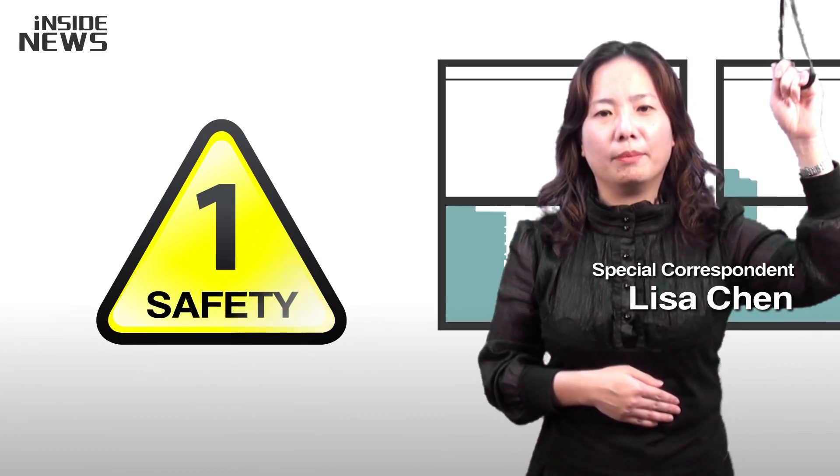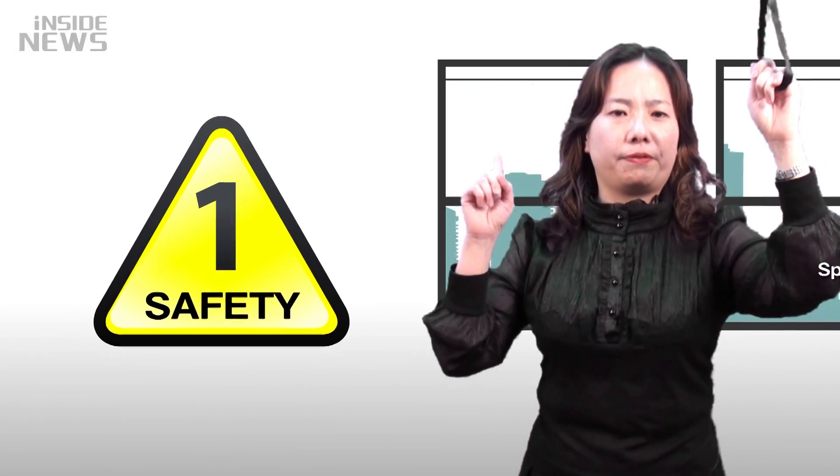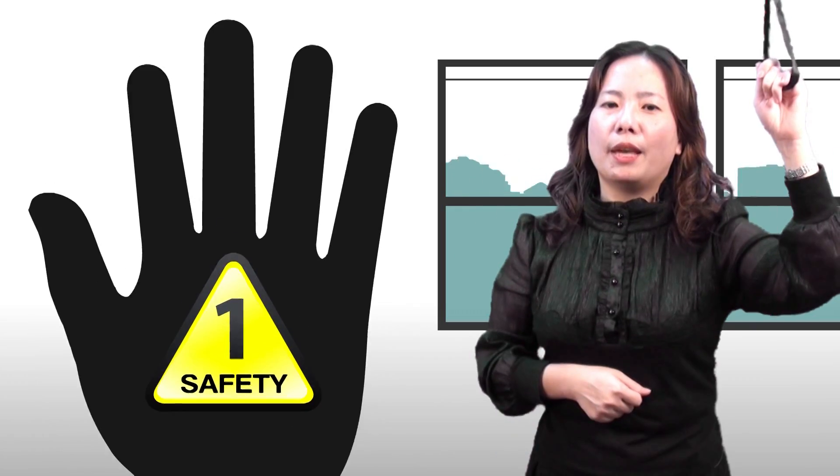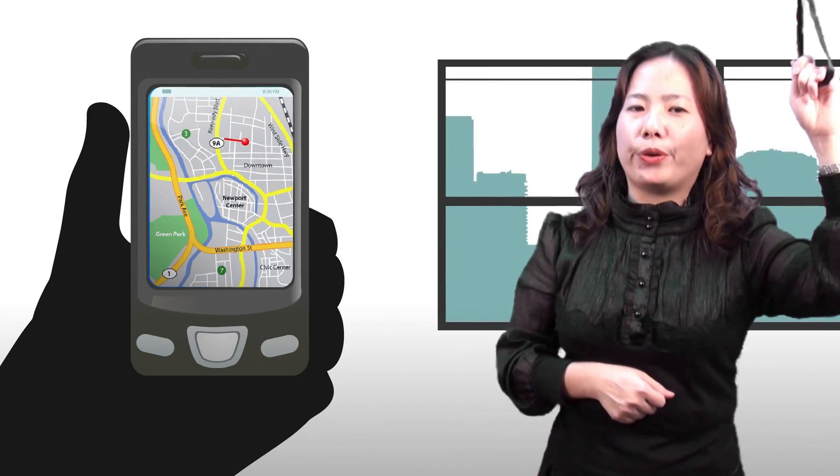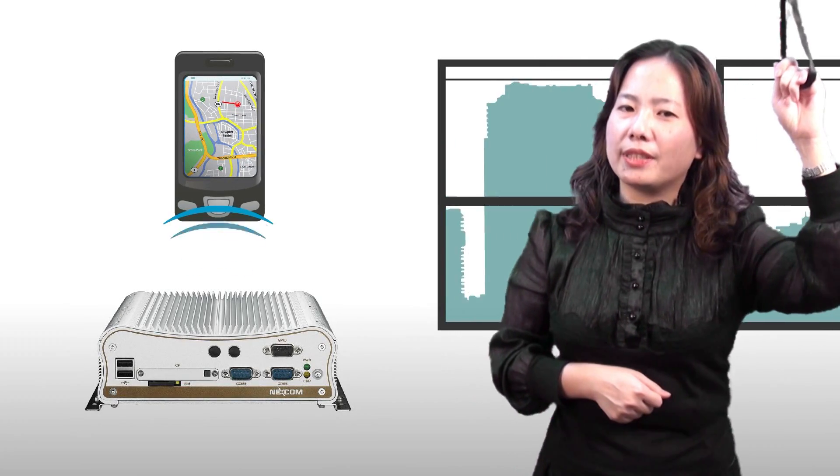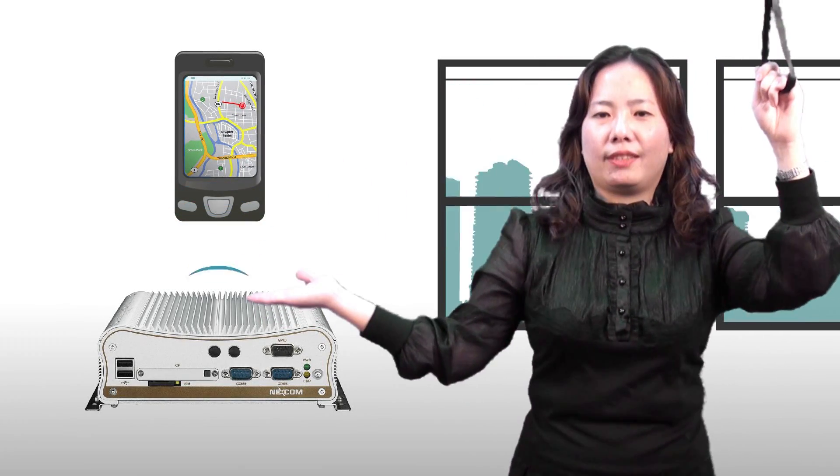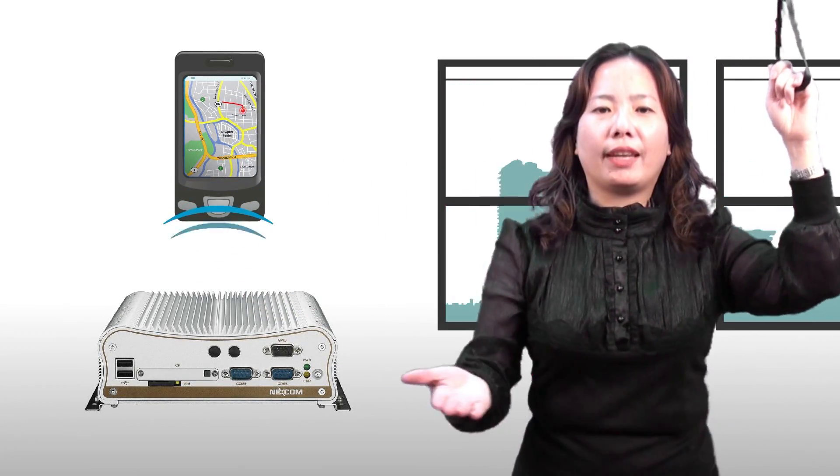After the 9/11 attack on America, safety became the first priority for all families. Parents may like to know where their kids are on the way to school or getting home. The Nice 2100 system can be an ideal computing system for in-vehicle telematic applications.